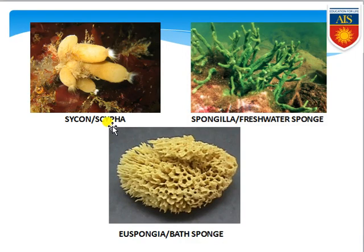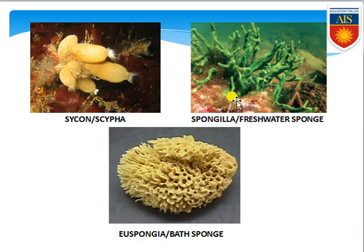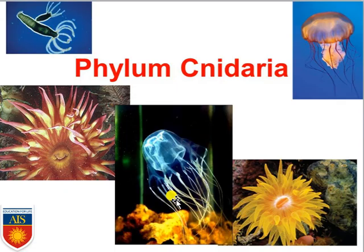Examples of sponges include Sycon (Scypha), Spongilla (freshwater sponge, found in ponds), and Euspongia (bath sponge, commonly used for bathing). After Porifera, we move to the next phylum — Phylum Cnidaria.